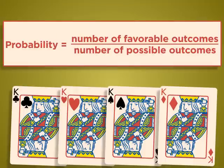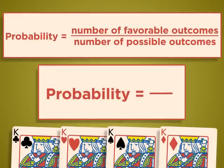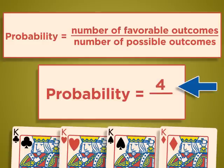To solve, plug these numbers into the probability equation. Because there are four kings in a deck, the number of favorable outcomes is 4.